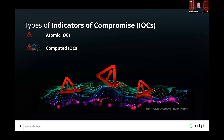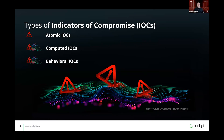For example, to calculate a file hash, you first have to collect all the packets related to the file, reassemble the file, and then calculate the hash value. The results of these calculations are then compared to a list of known bad or suspicious indicators to generate an alert.